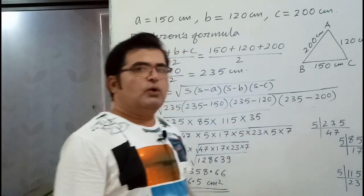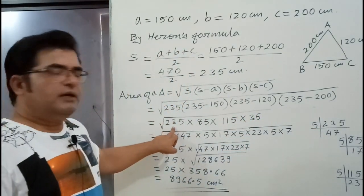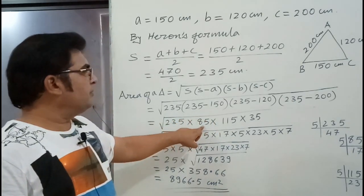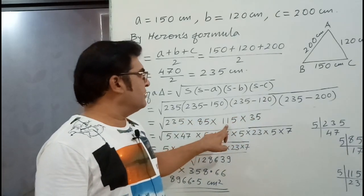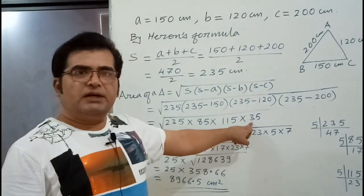Then simplify. 235 remains 235. 235 minus 150 becomes 85, into 235 minus 120 becomes 115, into 235 minus 200 becomes 35.